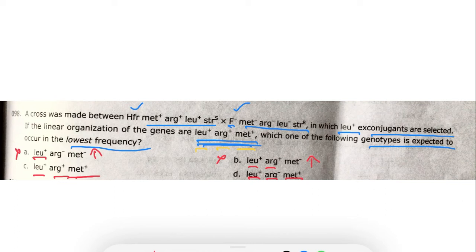Option D represents a very rare condition compared to option C. The linear gene organization specifies leucine, then arginine, then methionine — but in option D, methionine is transferred directly after leucine, skipping arginine entirely. This is an extremely rare recombination event. Therefore option D will be transferred at the lowest frequency and is the correct answer.